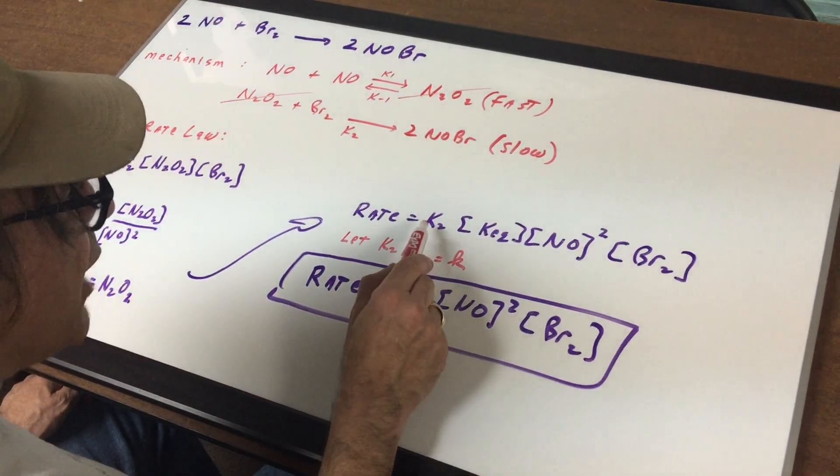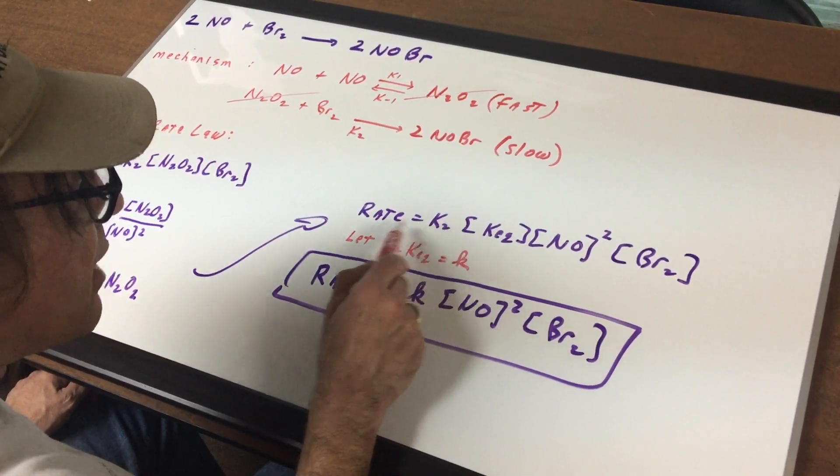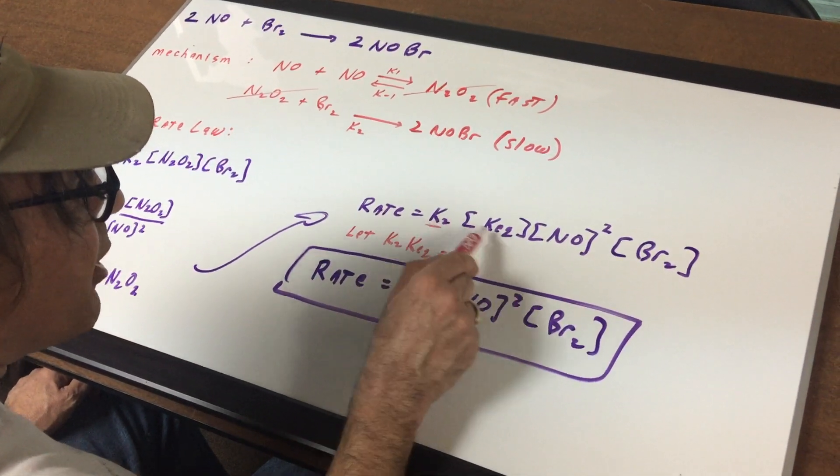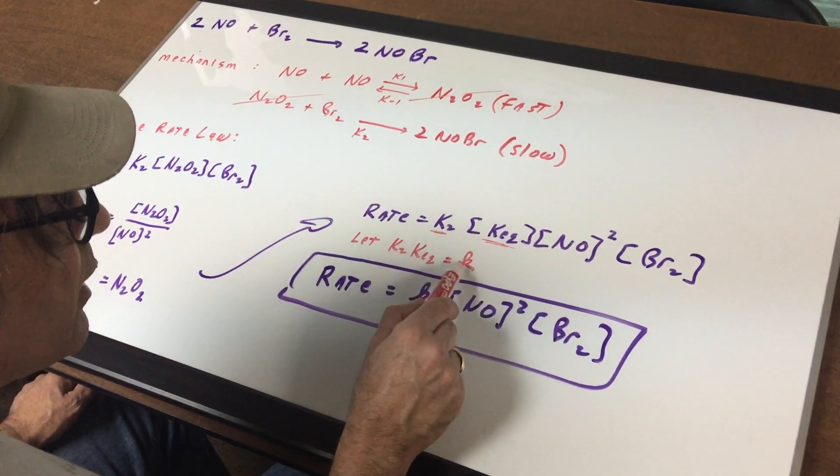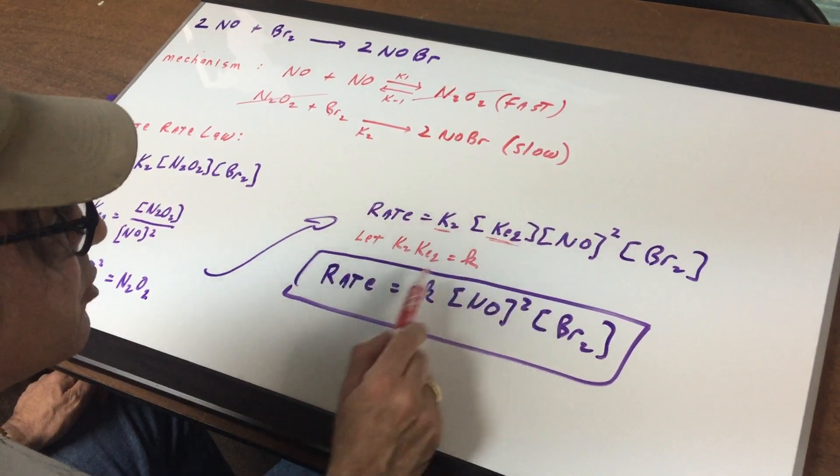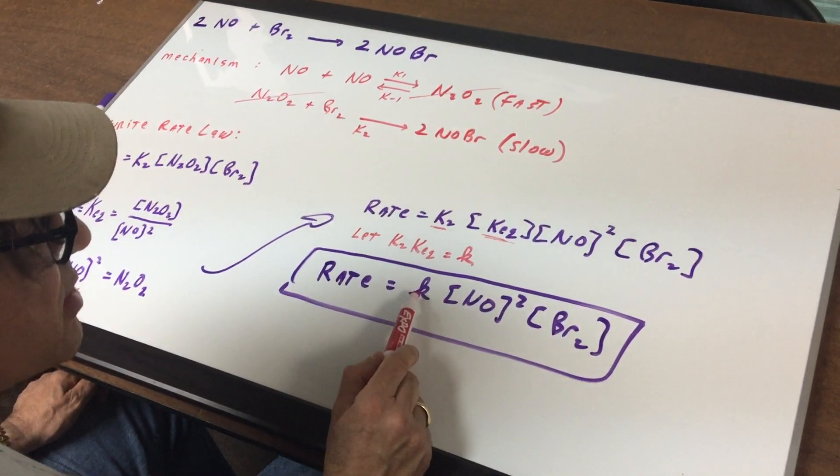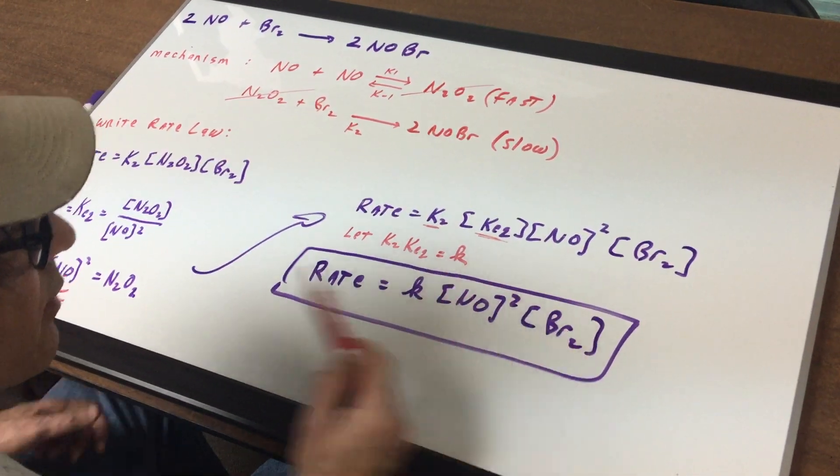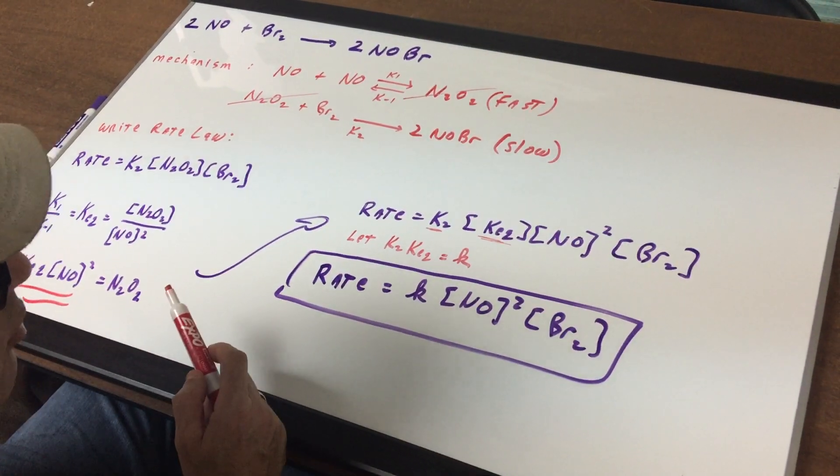There's the bromine. Then what I do is I collect all the Ks. I'm going to let K2 times KEQ equal little k. So once I did that and I substituted in, rate equals little k times the NO squared times the bromine. And that's the rate law.